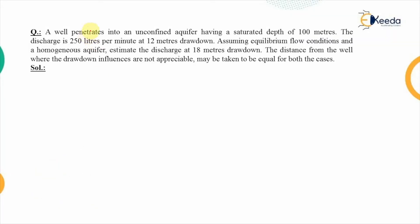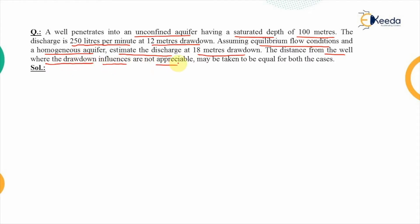The problem says that a well penetrates into an unconfined aquifer having a saturated depth of 100 meters. The discharge rate is given as 250 liters per minute at 12 meters drawdown. Assuming equilibrium flow conditions and a homogeneous aquifer, we have to estimate the discharge at 18 meters drawdown.